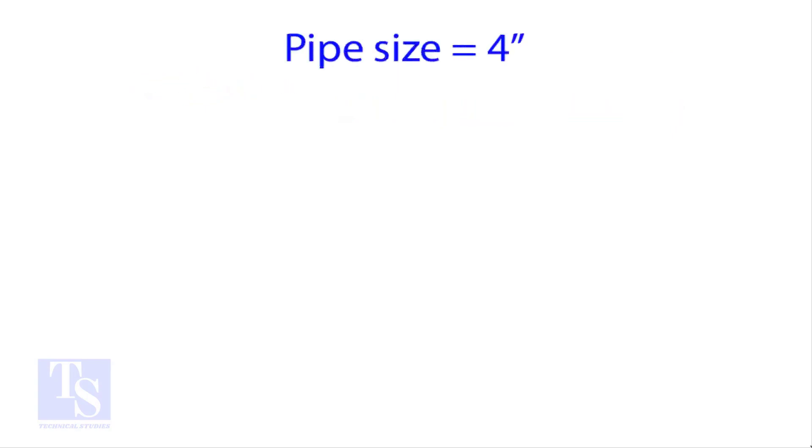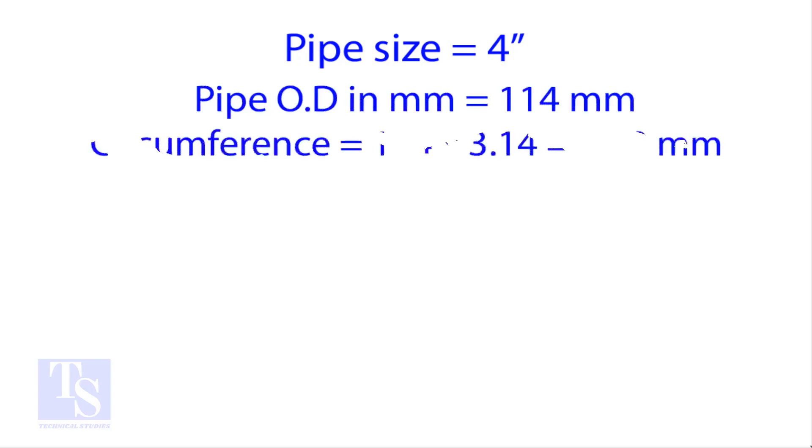Calculate the cutback of a four inch pipe with four cuts. OD of a four inch pipe is 114 millimeters. Multiply the OD by 3.14 for the circumference. The bend angle is 90 degrees. Number of cuts is 4.